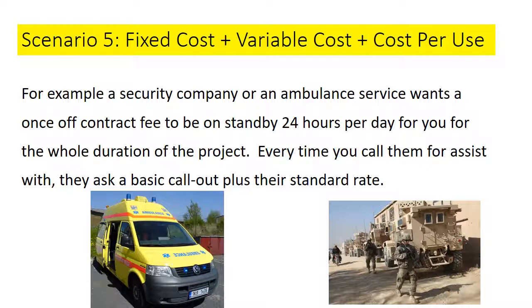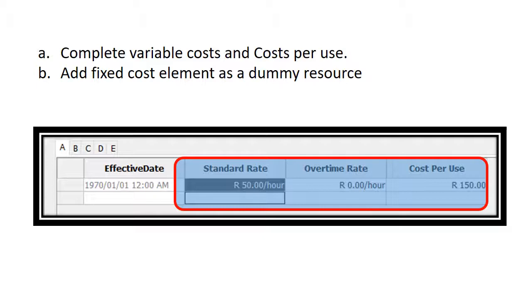In the last scenario, you have a fixed cost plus a variable cost plus a cost per use. For example, an ambulance or security service: you pay them a fixed contract fee to be on standby for the duration of the project, there is a cost per use every time they come out, and then a variable cost for the hours they work. In this case, complete the standard rate for hours worked and the cost per use for each callout. The fixed monthly or quarterly fee is then assigned as a dummy resource.